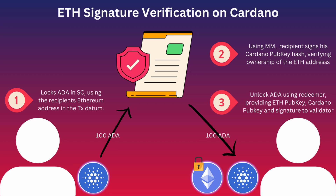After Alice sends her ADA, Bob now has to use his MetaMask to sign his Cardano public key hash, verifying ownership of the Ethereum address. He's basically taking his public key on Cardano and signing it as a message using his Ethereum-based wallet. If anyone else were to attempt this, because they don't have access to that specific Ethereum wallet, the signature would be invalid — signed by a different address than what Alice is expecting.